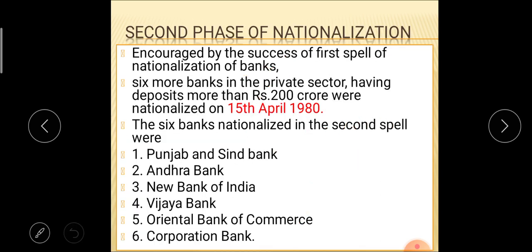The second phase of nationalization took place on 15th April 1980, during which approximately six banks were nationalized. Encouraged by the success of the first phase, this second phase was undertaken. Six more banks in the private sector having deposits of more than 200 crores were nationalized. The criteria for the second phase was that banks having deposits of more than 200 crores were selected.